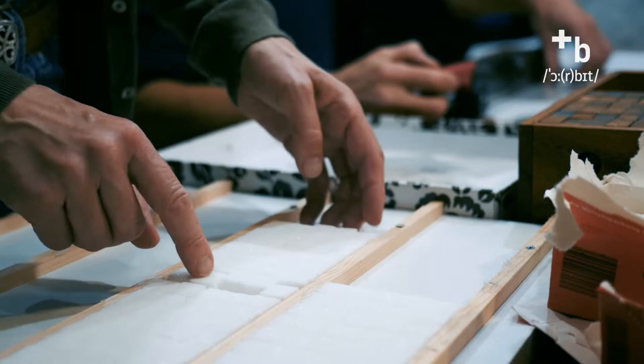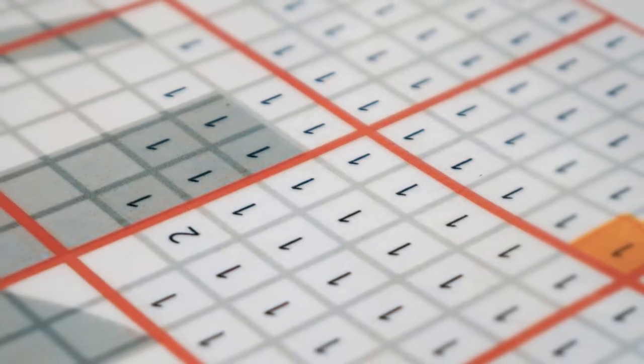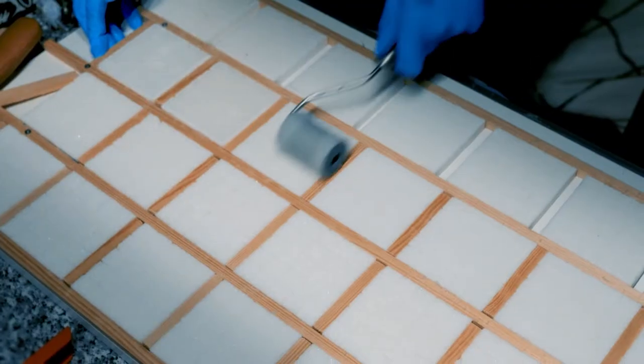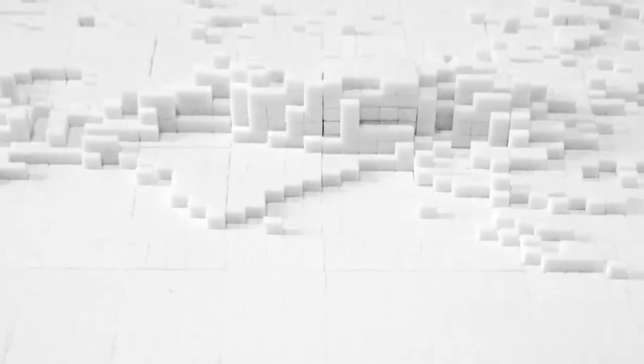Our work Orbis Lumen shows the Dymaxion world map built from over 40,000 sugar cubes. Using sugar cubes as pixels emphasizes the intimate relationship between humanity, information, energy, resources and the resulting impact on society and nature.